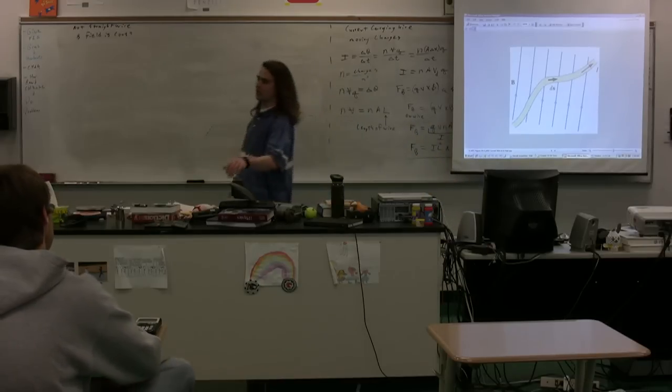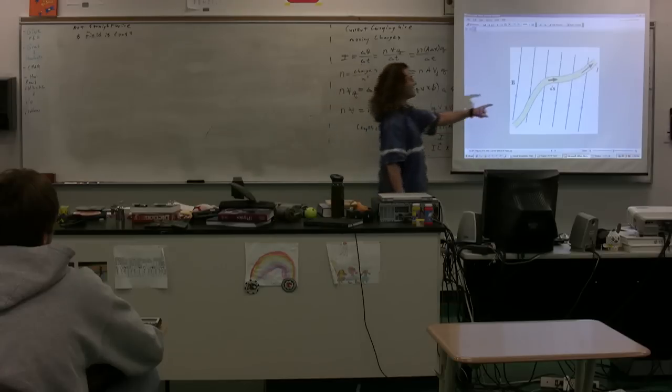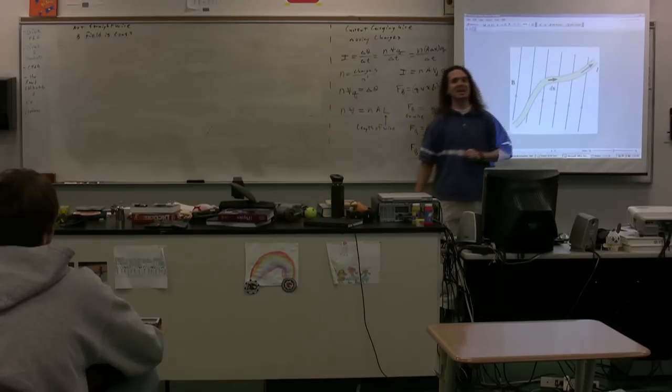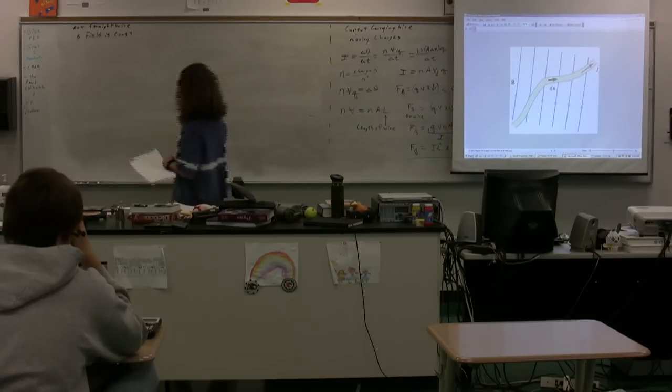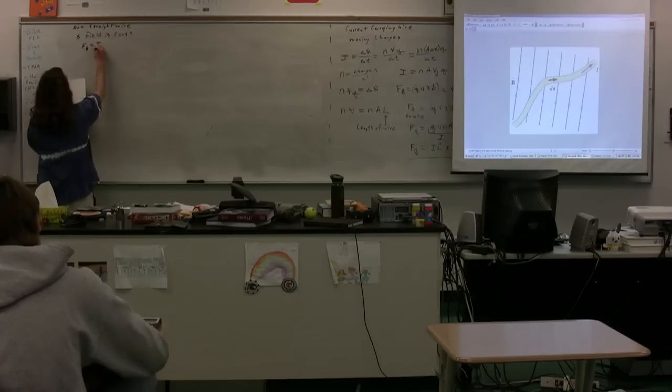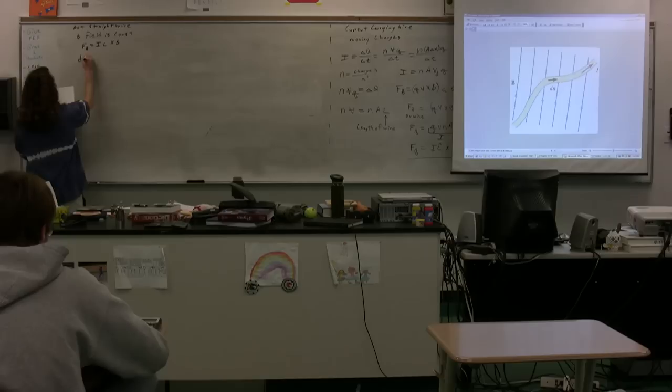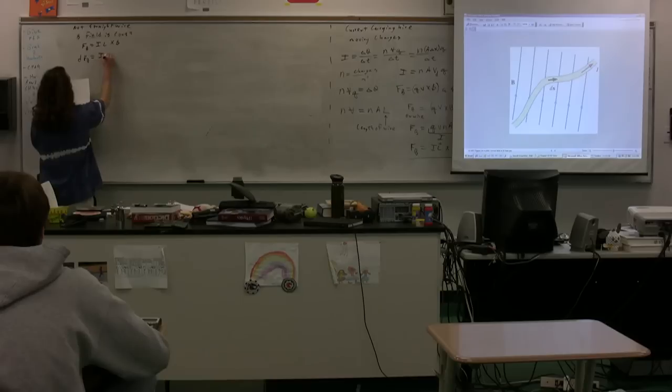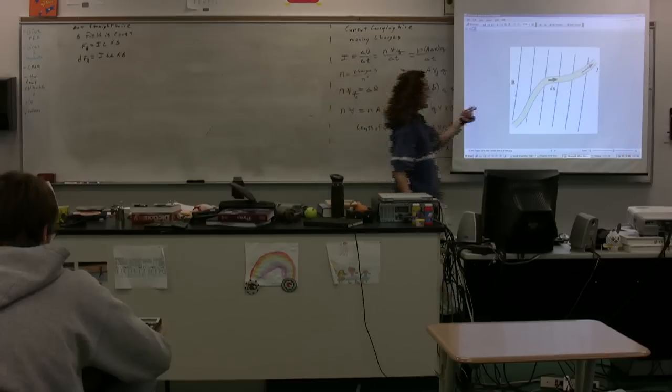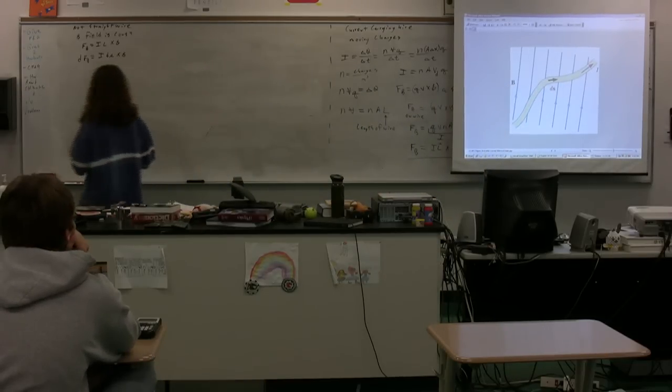What we have to do is take this wire and break it into little segments, little piece ds, because we're talking about the length of the wire. So instead of having the magnetic force equals current times length with a cross product of the magnetic field, we have little dFB is equal to current times ds cross B. We've broken the wire into little tiny pieces and they have little tiny forces, magnetic forces.